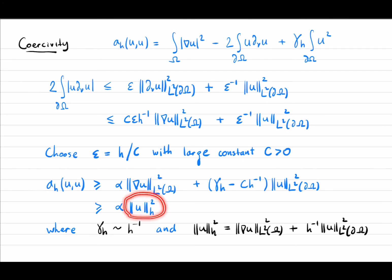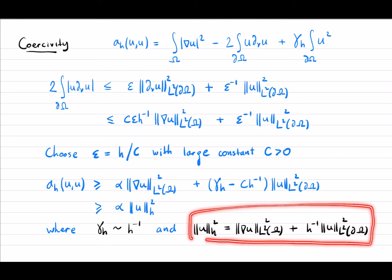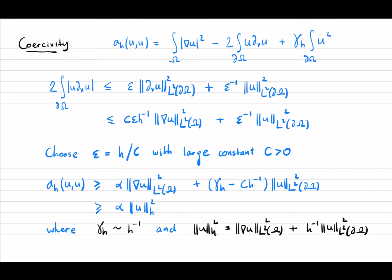This informs us about the norm we want to choose for the discrete space. This norm should be defined on X plus X_h. We choose this discrete norm — forgetting the exponent 2 — to be the H^1 semi-norm of u on the interior plus h^{-1/2} times the L2 norm of u on the boundary. So we have coercivity, provided we choose gamma_h to be of this form.